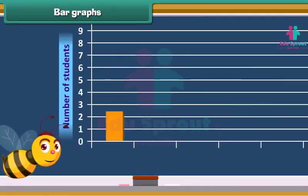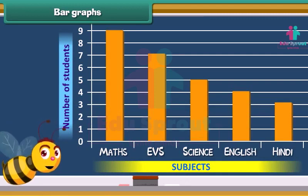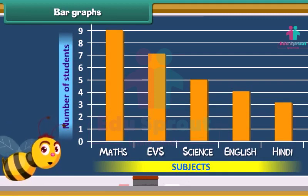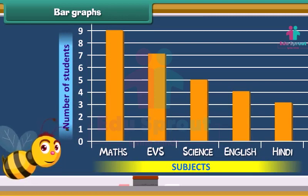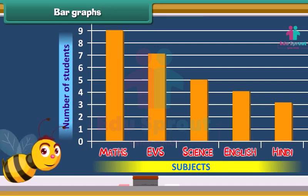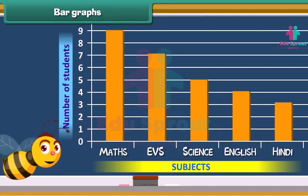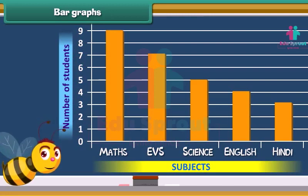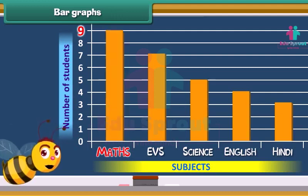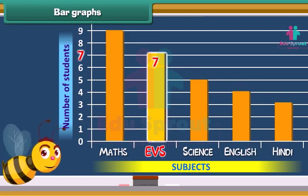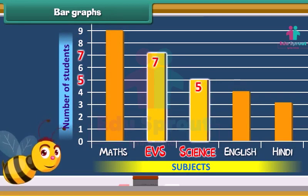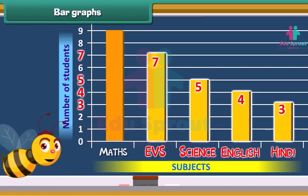The given chart is known as a bar graph. These graphs are another way of data representation. A bar graph uses bars to represent data. In the given graph, subjects are listed at the bottom and the number of students is given at the side. In this graph, 9 blocks tell us the number of students who like maths. Similarly, there are 7 blocks in EVS, 5 blocks in science, 4 blocks in English, and 3 blocks in Hindi.